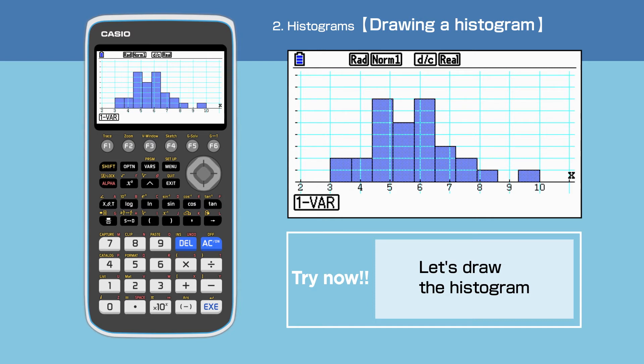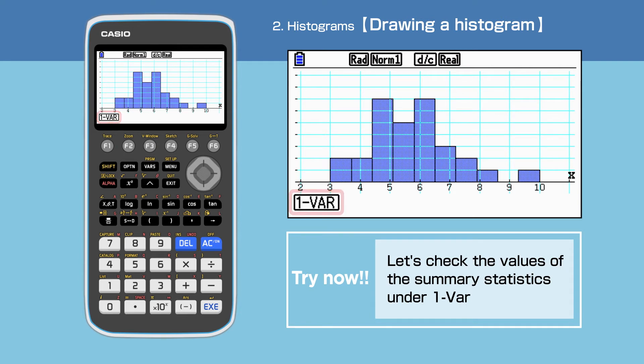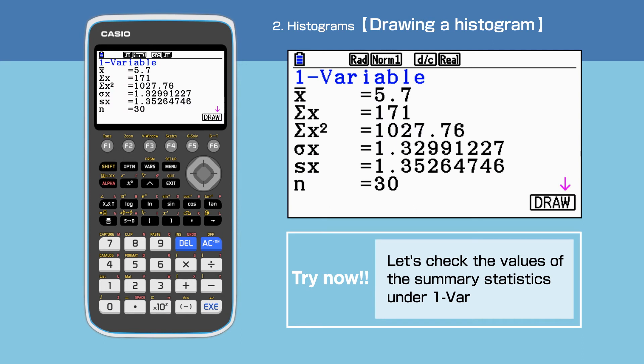On the histogram, the Y axis represents frequency. It is possible to check values of the summary statistics under one bar. The summary statistics show that the mean is 5.7 and the standard deviation is 1.33.